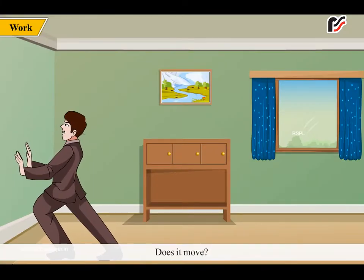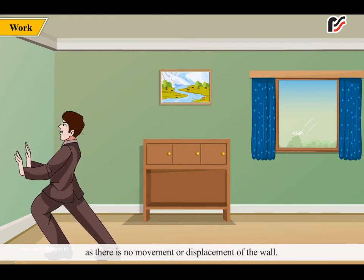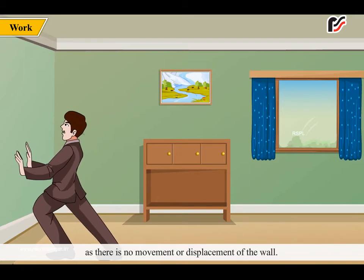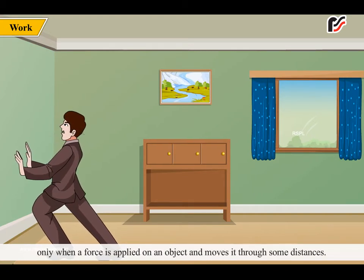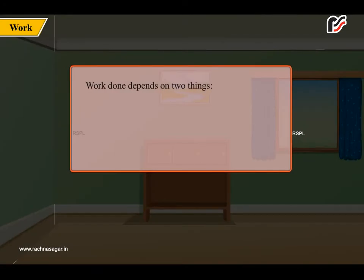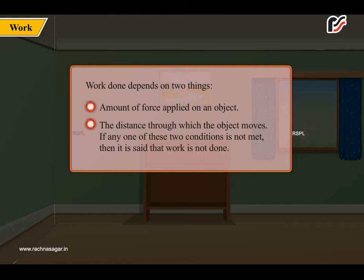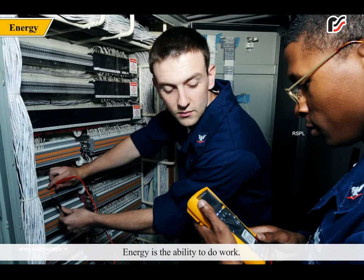Try to push a ball with your force. Does it move? No. Force is applied but work is not done as there is no movement or displacement of the ball. According to science, work is done only when a force is applied on an object and moves it through some distance. Work done depends on two things: the amount of force applied on an object, and the distance through which the object moves. If any one of these two conditions is not met, then it is said that work is not done.